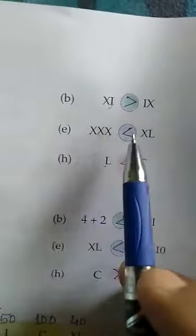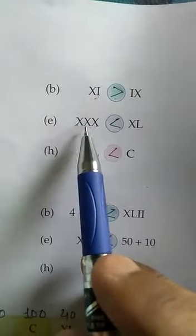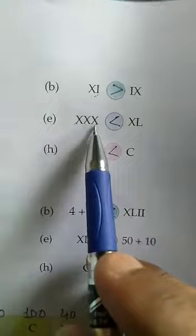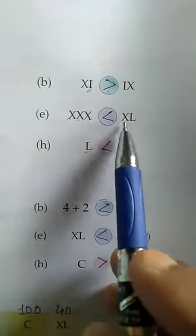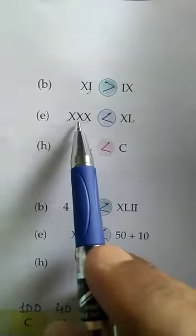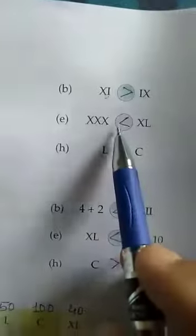Now QE: XXX and XL. We know very well XXX has 30 and XL has 40. So 40 is greater than 30, so this sign will come here.